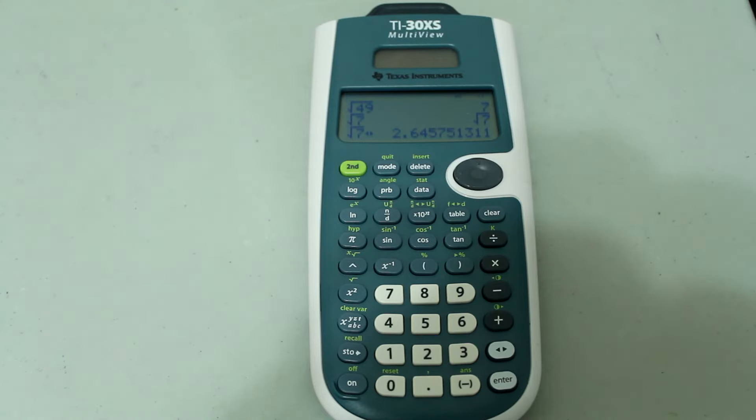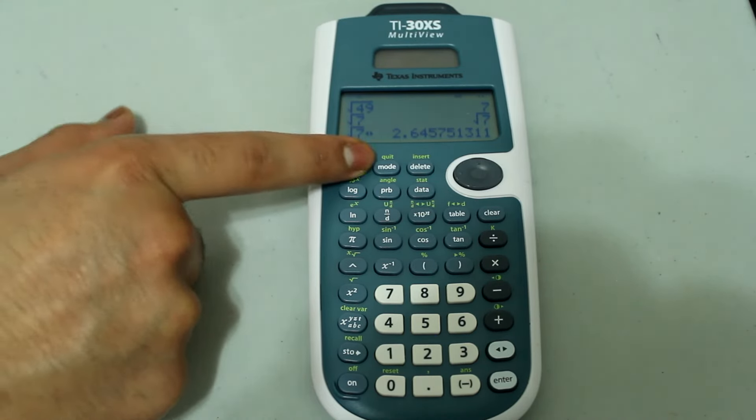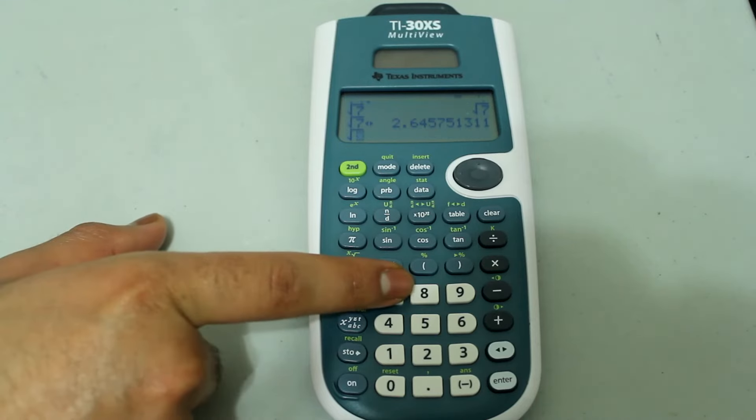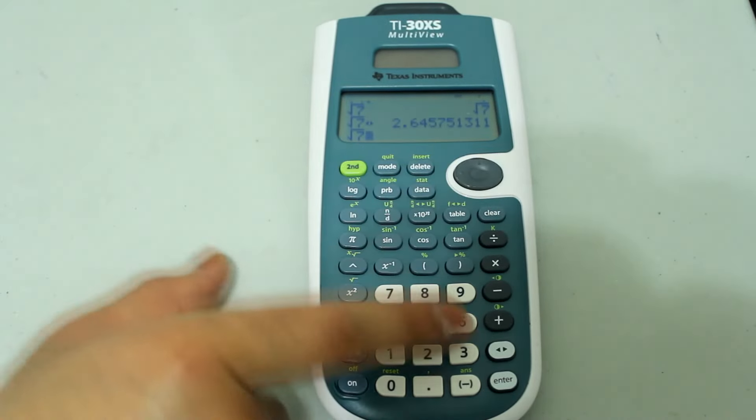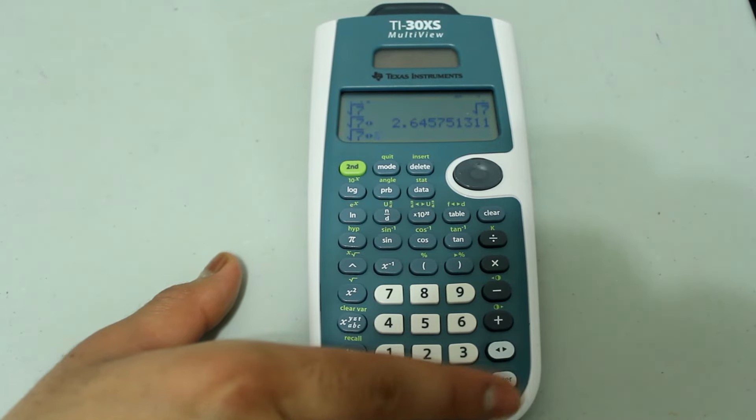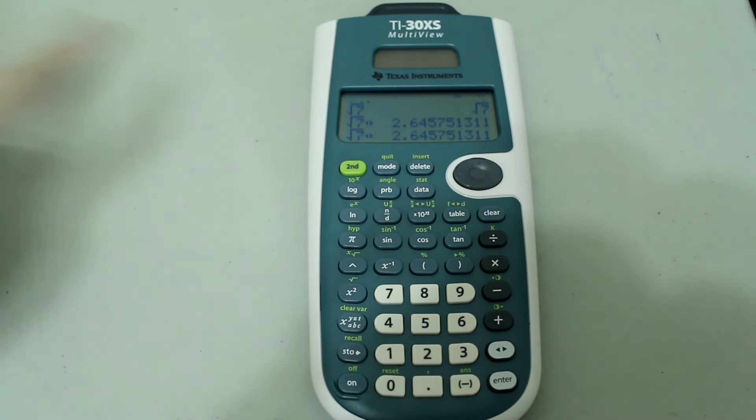If you don't want to do it in two steps, you can do it this way. So press 2nd x2 type in 7 and then arrow over and then press the toggle key and press enter. And the answer will show up in decimal form.